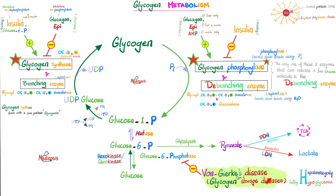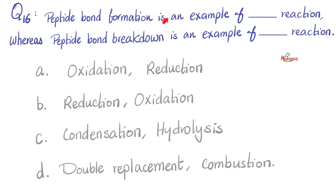To learn more about the different glycogen storage diseases, please refer to my playlist called Clinical Biochemistry. That's why the answer to the last question was glucose-6-phosphatase deficiency. Next: peptide bond formation is an example of a blank reaction, whereas peptide bond breakdown is an example of a blank reaction, respectively. Is it oxidation and reduction, reduction and oxidation, condensation and hydrolysis, or double replacement and combustion? Let me know your answer in the comments — you'll find the answer key in the next video.